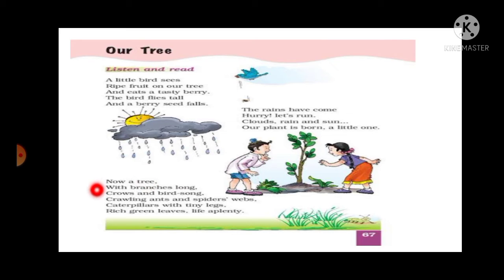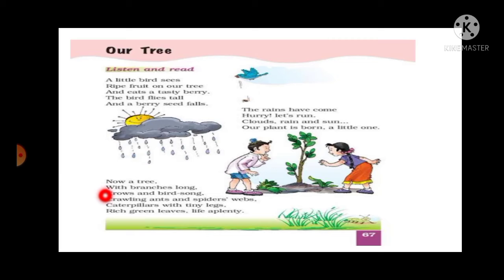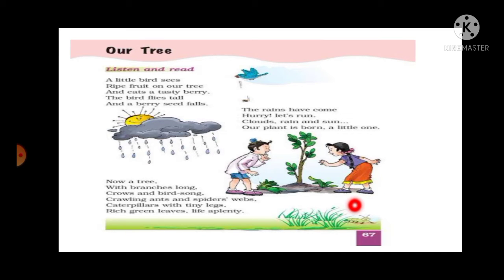Now let's see the third stanza: 'Now a tree with branches long.' This tree's branches became long and big. 'Crows and birds' song' — so there are lots of crows and birds coming. 'Crawling ants and spiders' webs' — there are ants and spiders' webs on the tree. 'Caterpillars with tiny legs' — look at this caterpillar in the picture. This caterpillar has tiny tiny legs.